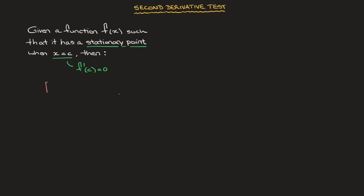If f''(c) — the second derivative evaluated at c — is negative, then the stationary point is a maximum. So at the stationary point, if the second derivative is negative, we're dealing with a maximum. On the other hand, if f''(c) is positive, then the stationary point is a minimum.